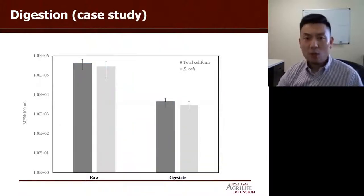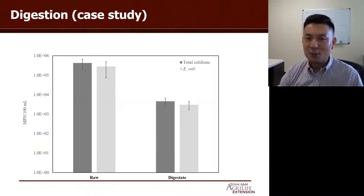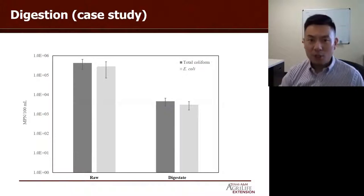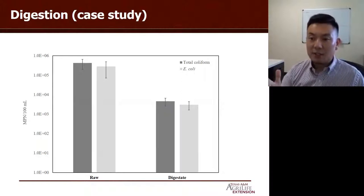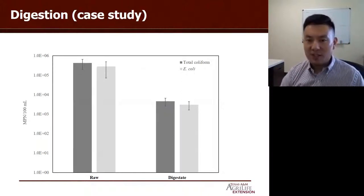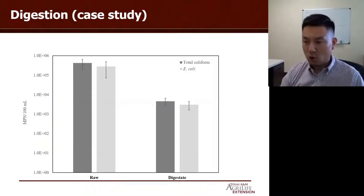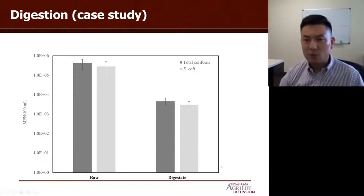Here is a case study I did a few years ago during my PhD in Wisconsin. This was a whole-year study where we took multiple samples at a large farm with multiple treatment processes. The anaerobic digester was the most significant treatment for reducing bacterial indicators — from the results we can see it reduced more than two logs of bacterial indicators.